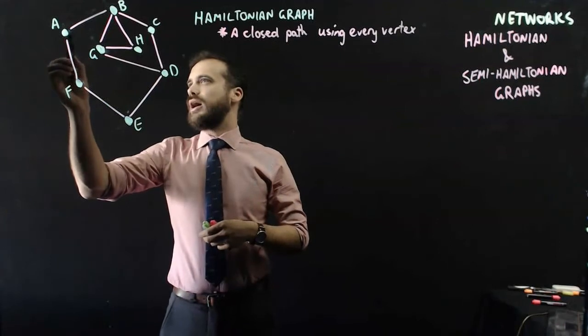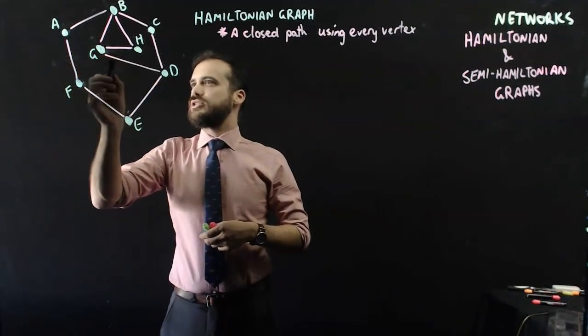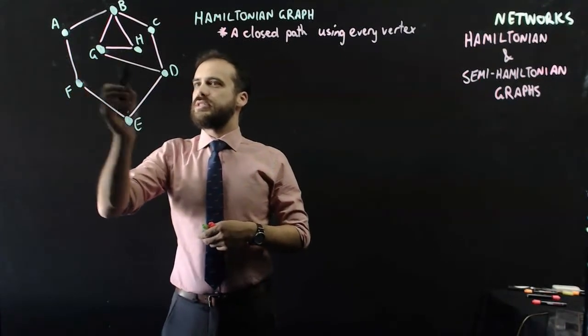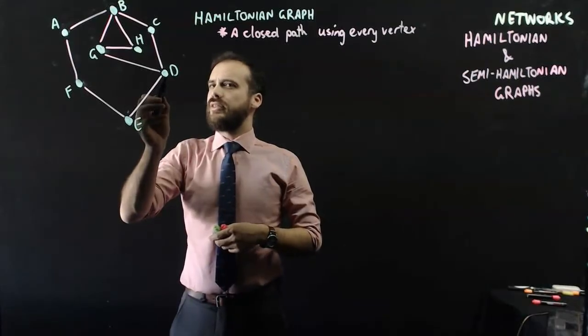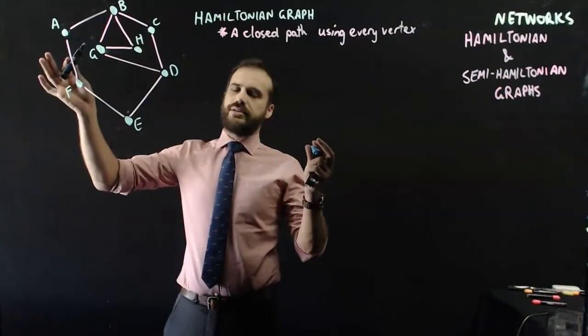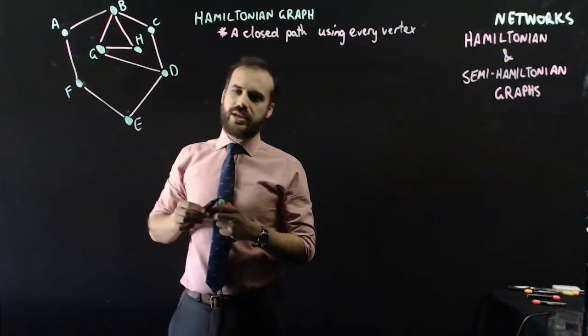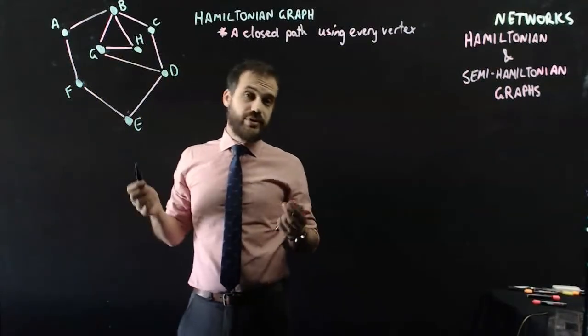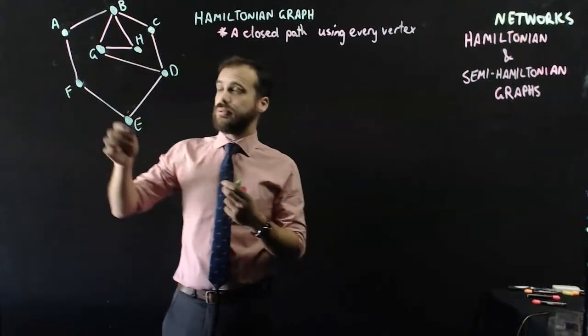I'm going to go from A to B to H to G to D, and then to E to F to A. Great. Except I forgot C. So I got back to where I started, but I didn't visit one of the towns. That's a big problem.